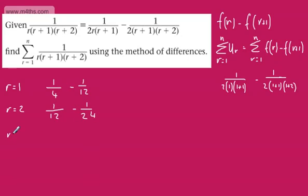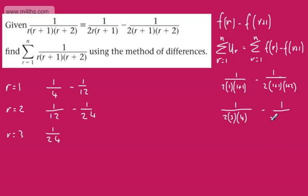Taking r=3: we get 1 over 2×3×4 = 1 over 24, then subtract 1 over 2×4×5 = 1 over 40. You can see that these terms continue the pattern and will cancel in the middle.